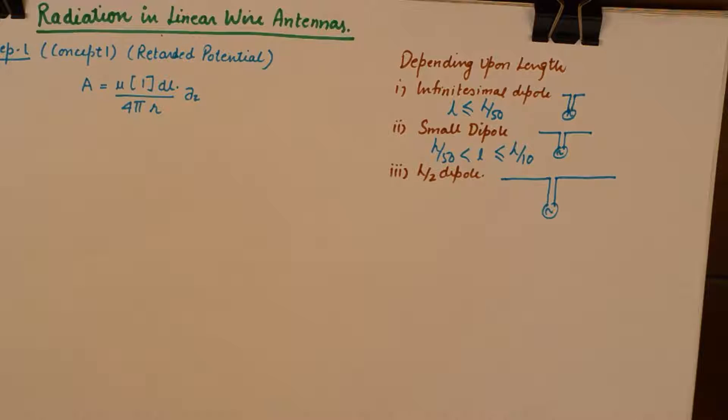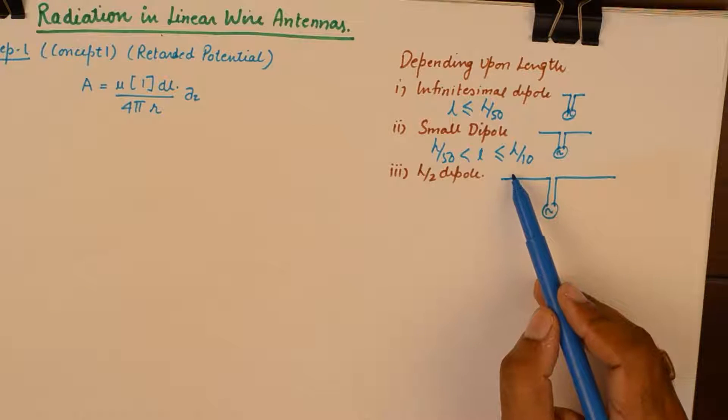That would matter a lot in the mathematics of radiation in linear wire antennas because the starting point of discussion or derivation of radiation fields is the very cause of the making of radiation fields which is the current. The current distribution in infinitesimal dipole would be a constant current because the length of the antenna is so small that you will not be able to see the variation of the current in the length of the wire.